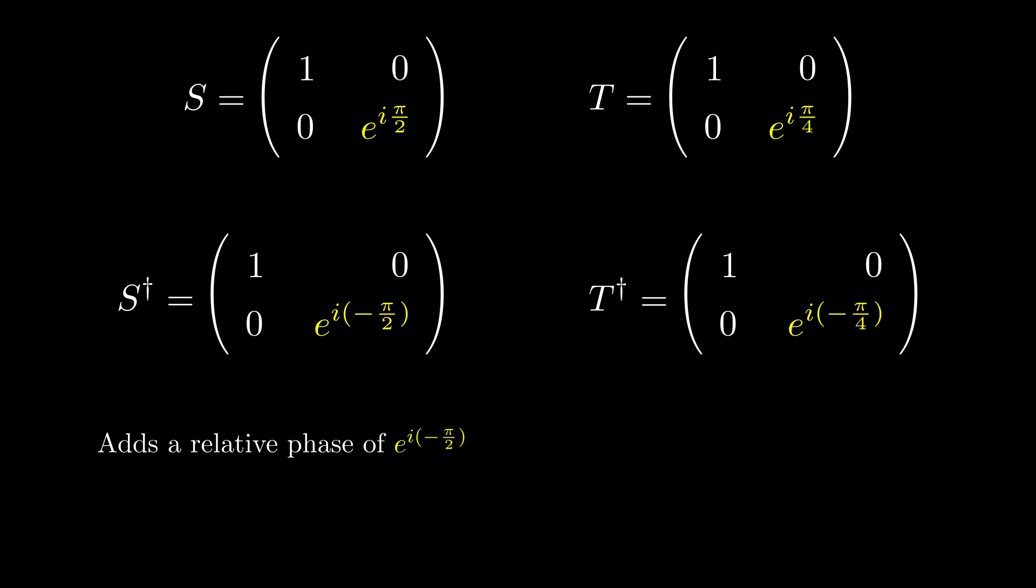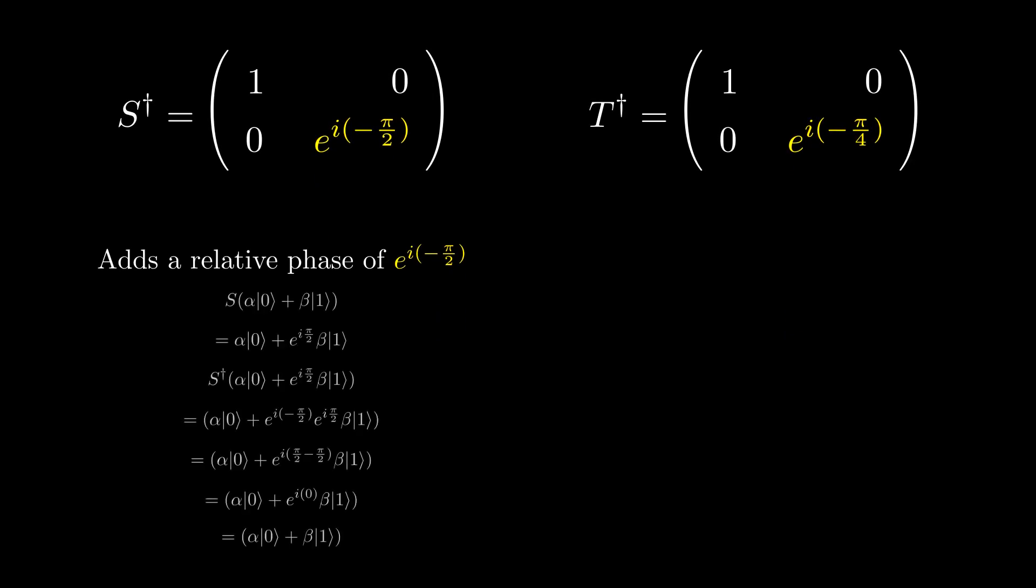This means that if we apply an S gate, then an S dagger gate, we are back in the same spot, meaning the S dagger gate is the inverse of the S gate.